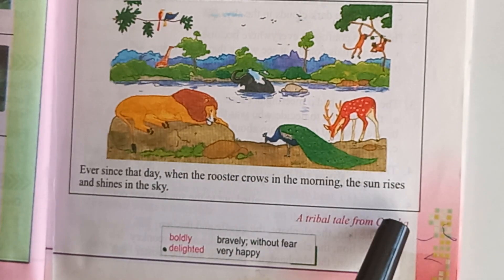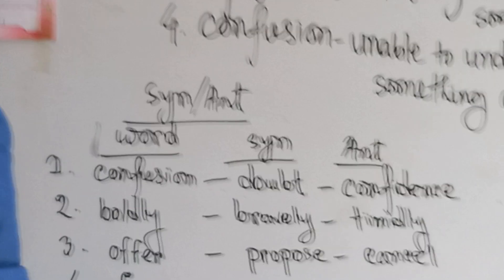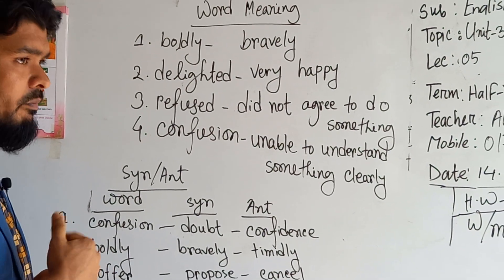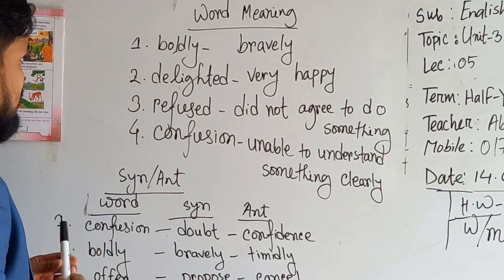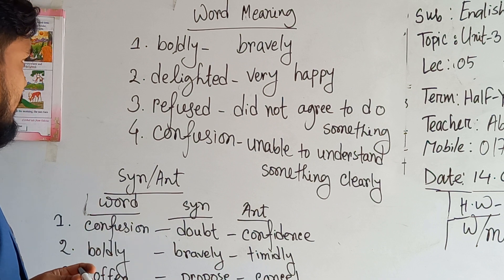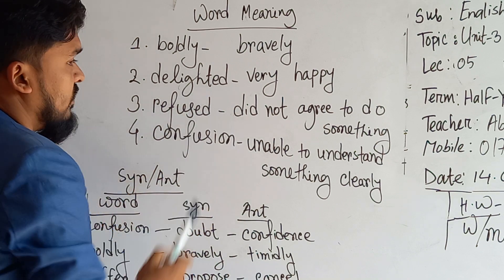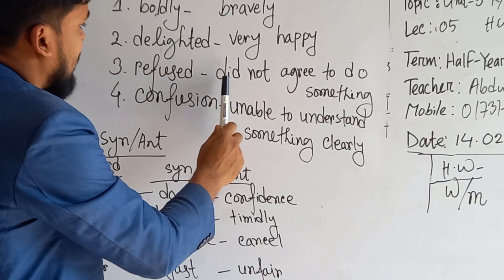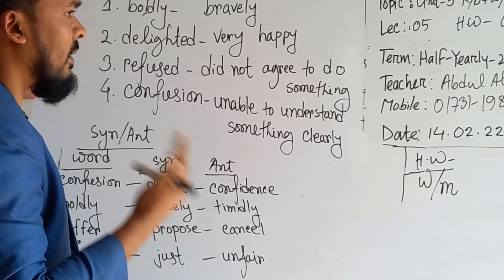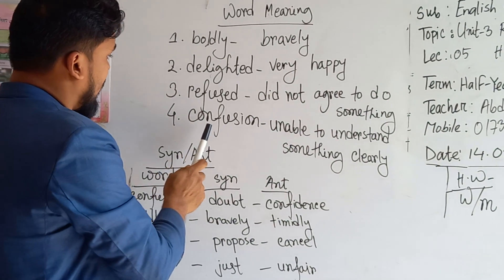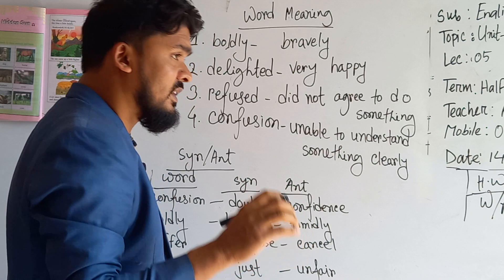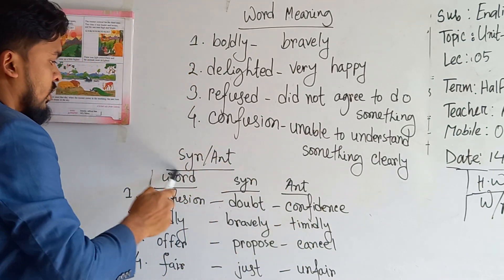This text is a tribal tale from Odisha. Now, dear students, come to the word meanings — four odd meanings. Number one: 'boldly' — this is an adverb; the adjective is 'bold,' meaning brave, so 'boldly' means bravely. Number two: 'delighted' means very happy. Number three: 'refused' — this is a negative word; to refuse means did not agree to do something. Number four: 'confusion' means unable to understand something clearly.